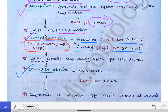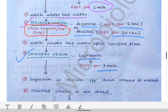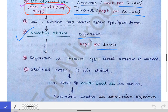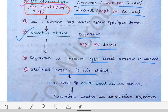Then we do the counter staining. In our college at NRSMCH, we used safranin at each rack. We put safranin over the slide and keep it for one minute. After one minute, the safranin is removed and the smear is washed again, then the stained smear is air dried.